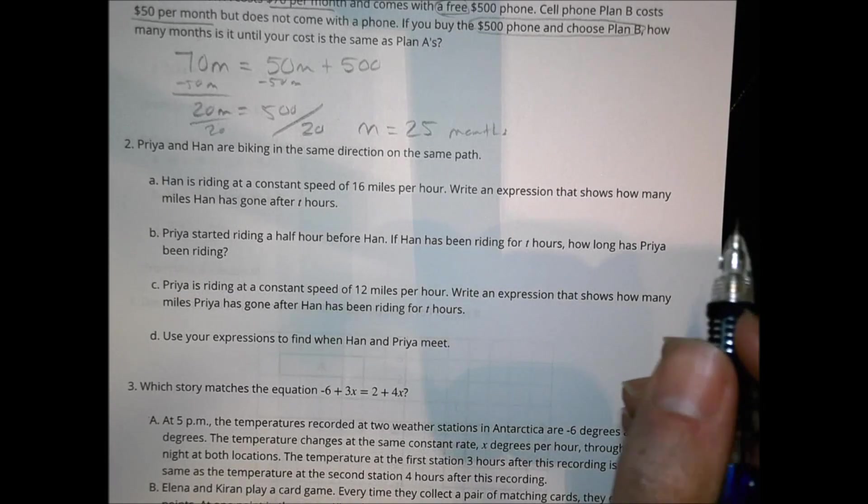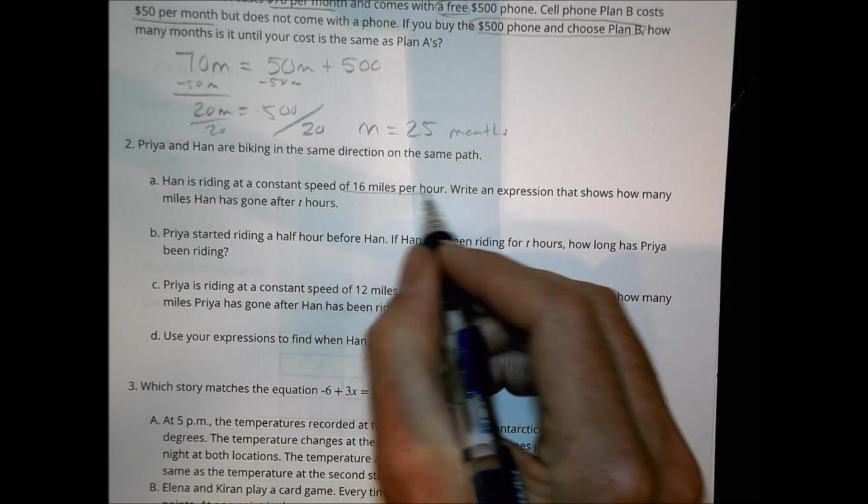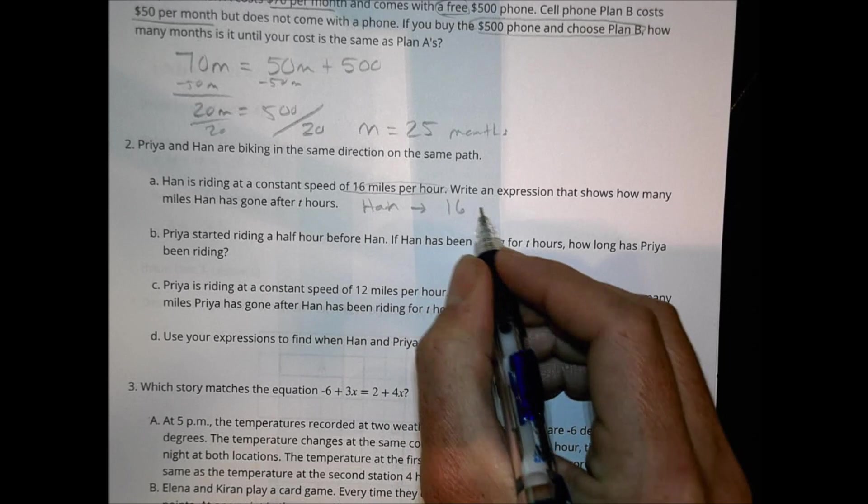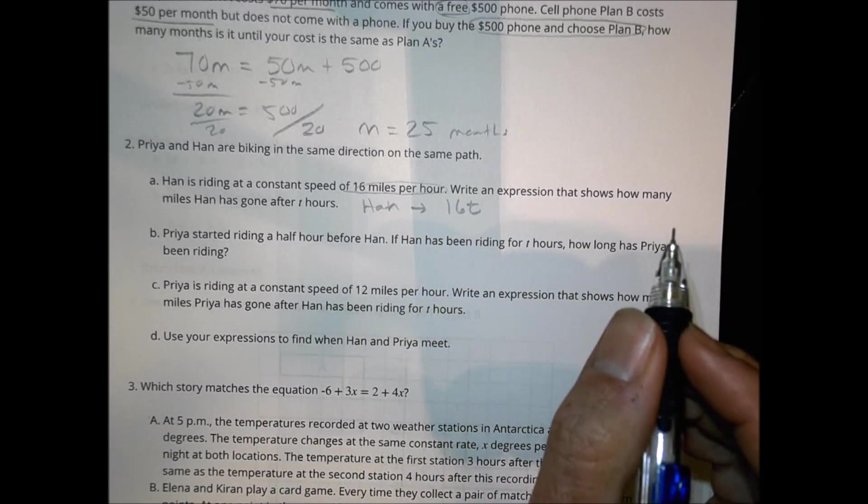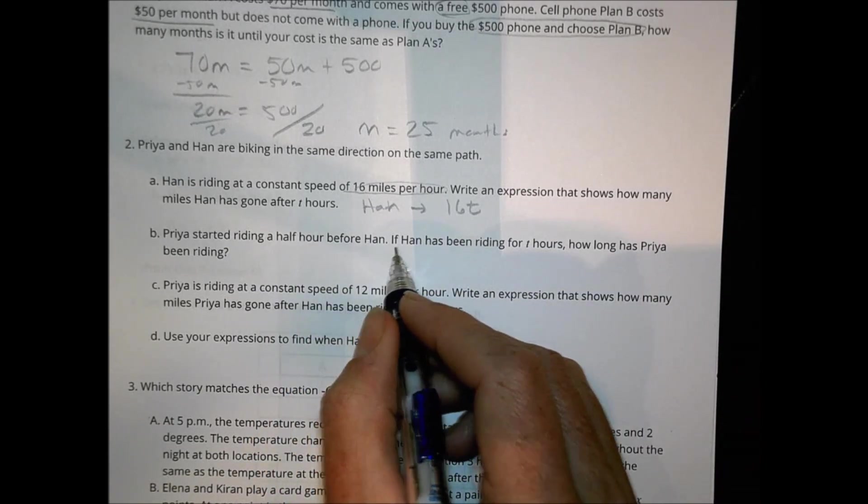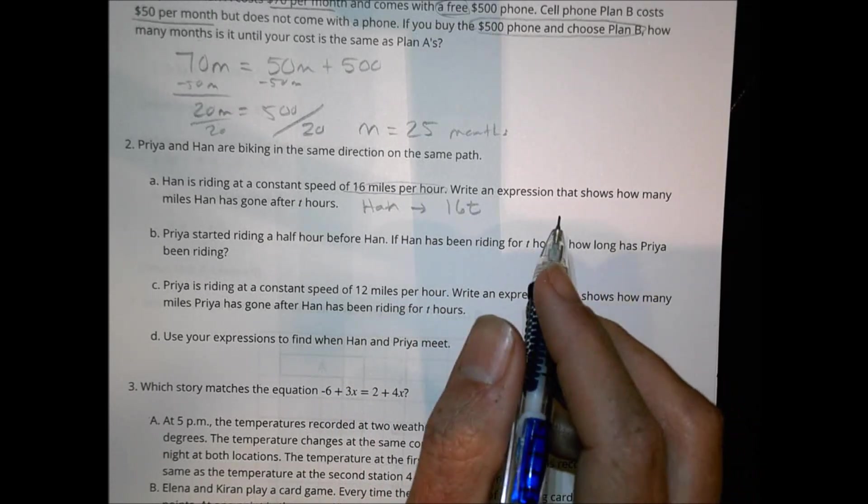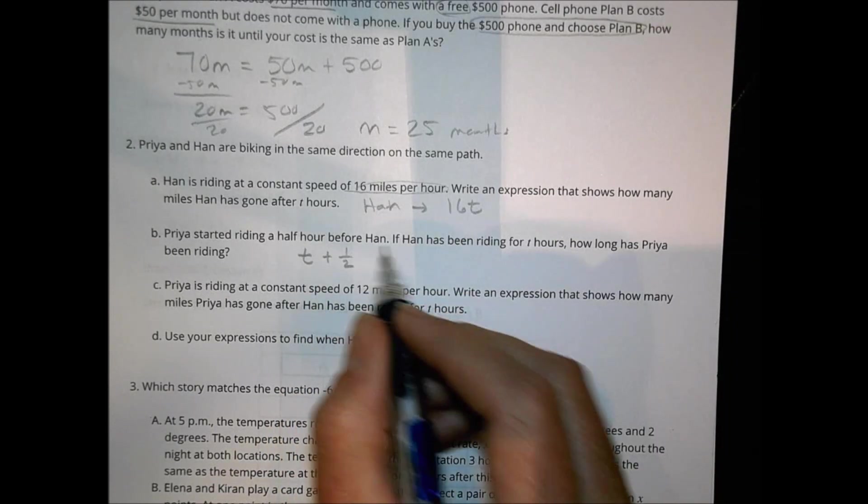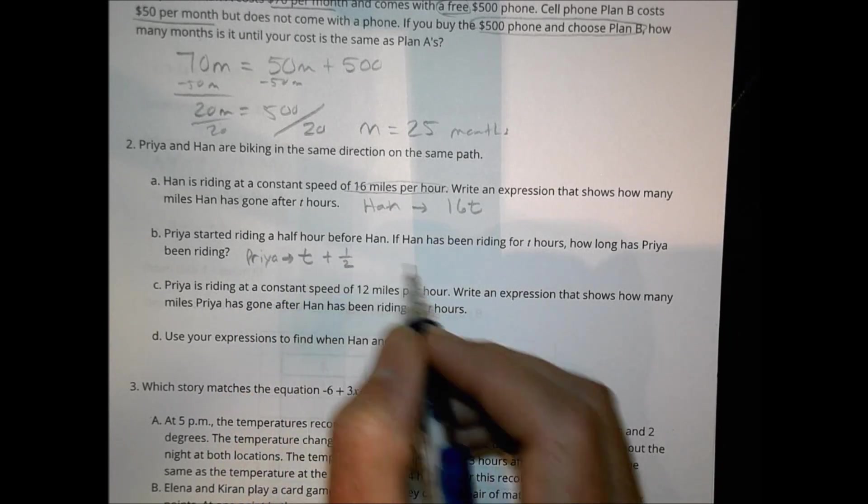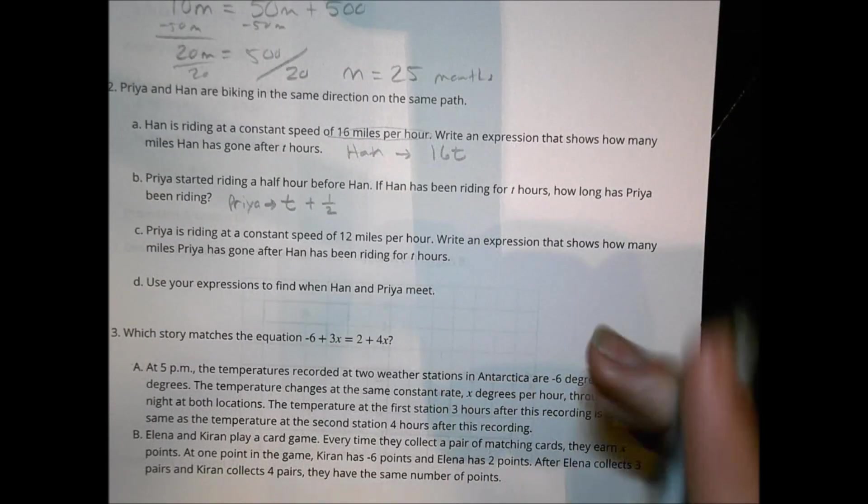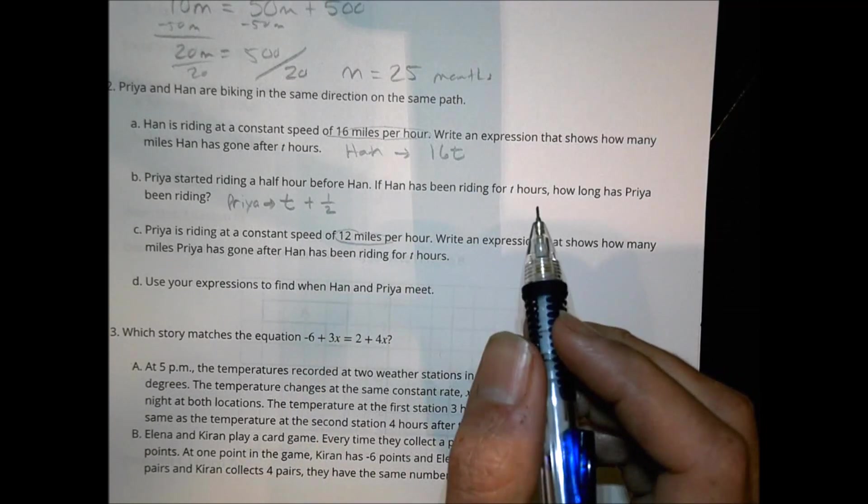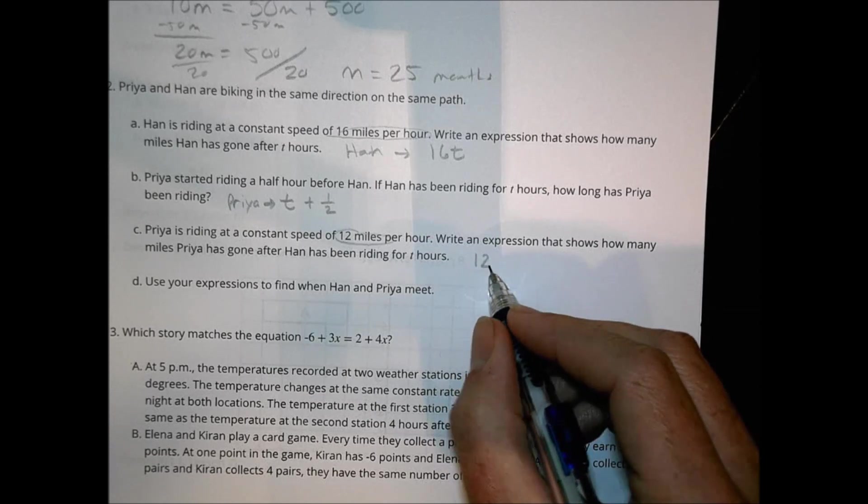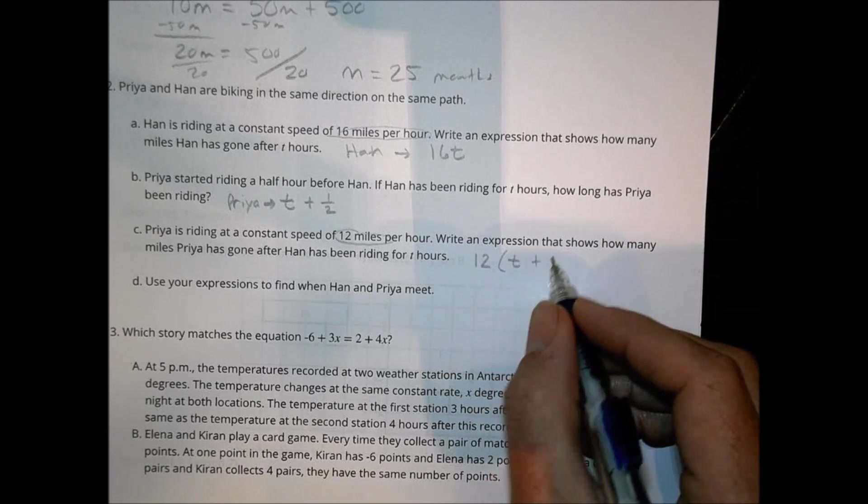Number 2. Prya and Han are biking the same direction on the same path. Han is riding at a constant speed of 16 miles per hour. Write an expression showing how many miles Han has gone after T hours. Han is traveling at 16 miles every hour. We can call it hours time. So expression would be 16T. Prya started riding half an hour before Han. If Han has been riding for T hours, how long has Prya been riding? In this case here, we're going to take the hours that she's riding plus half an hour. That's going to be what Prya is going to run. So it's time plus half an hour more. Because she started before Han there. Now it says she's riding at a constant rate of 12 miles per hour. And he was going 16 miles per hour. Write an expression that shows how many miles Prya has gone after Han has been riding for T hours. That expression would look something like this. We say 12 miles per hour times what she's doing is T plus a half.